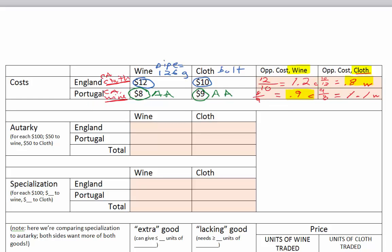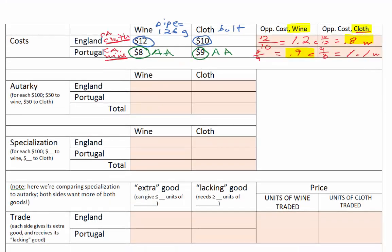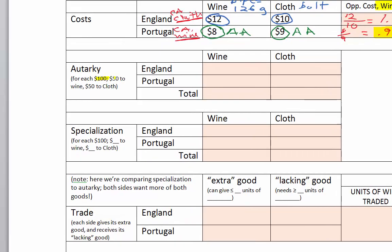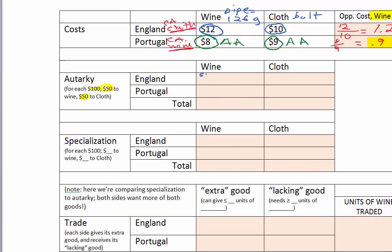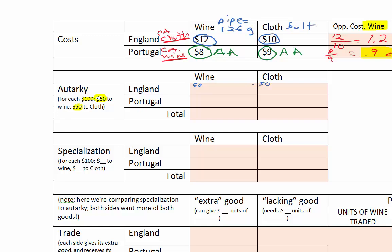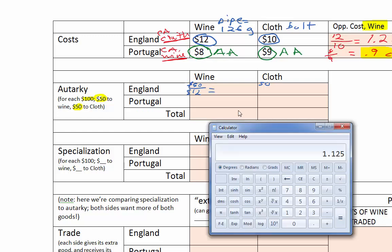Before specialization, let's establish autarky — where each country tries to do everything by itself. As a baseline, just like in the homework problems, we give each country $100 worth of resources divided evenly: $50 each to cloth and wine. So how much wine can England make with $50 devoted to wine? Wine costs $12 per pipe, so it's $50 divided by $12.